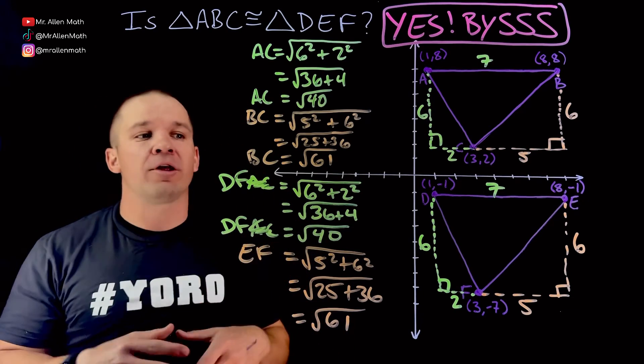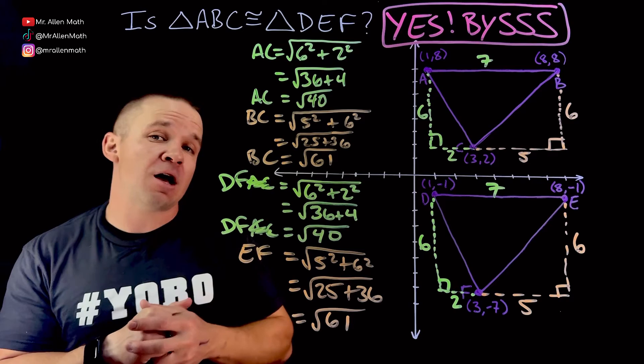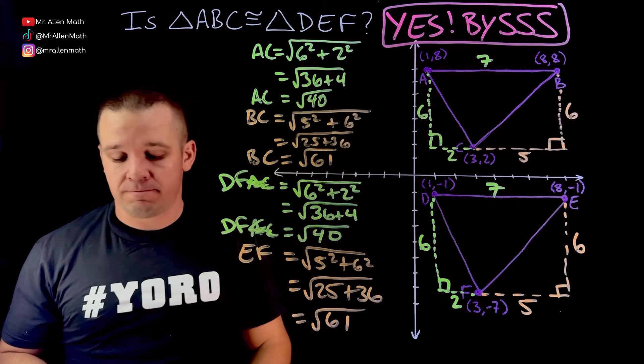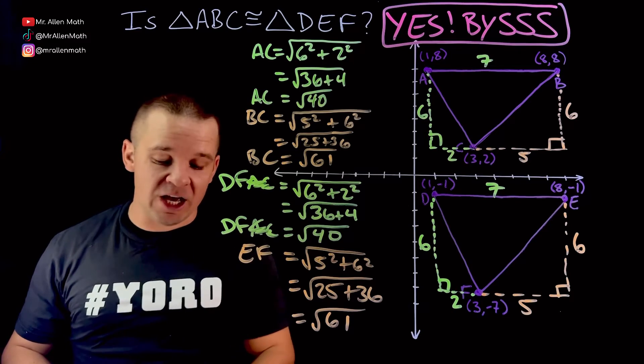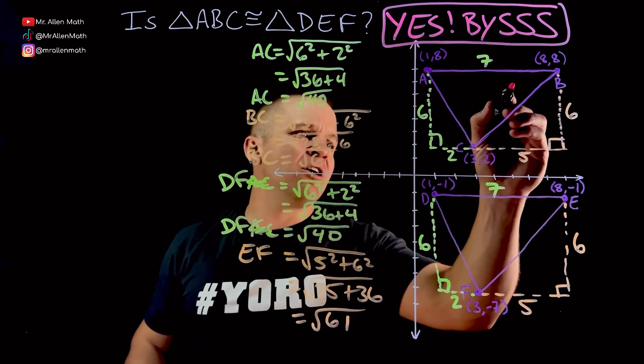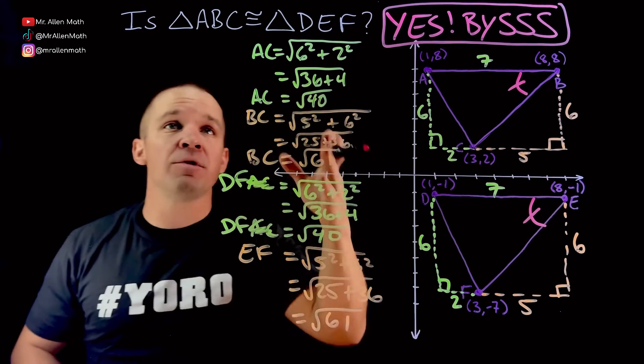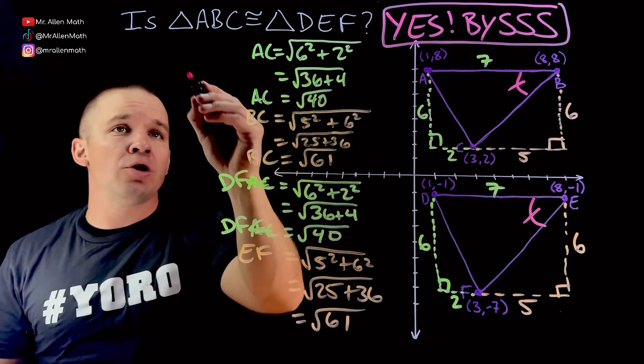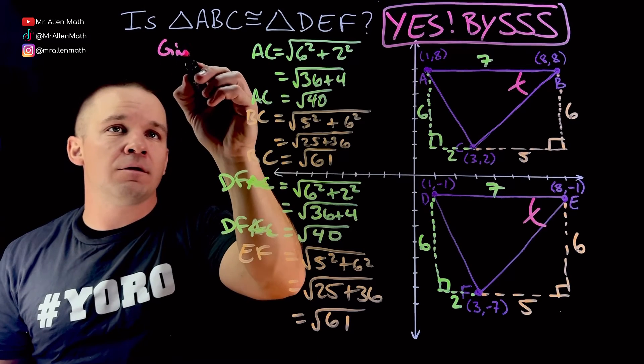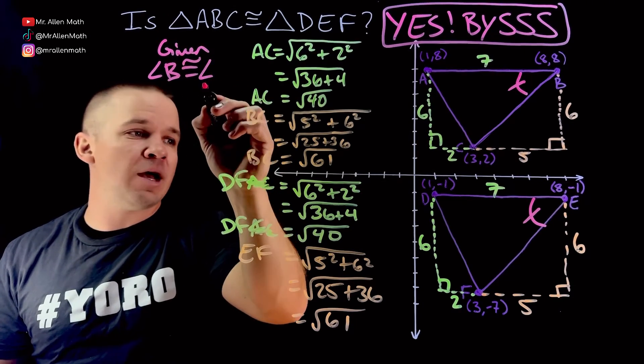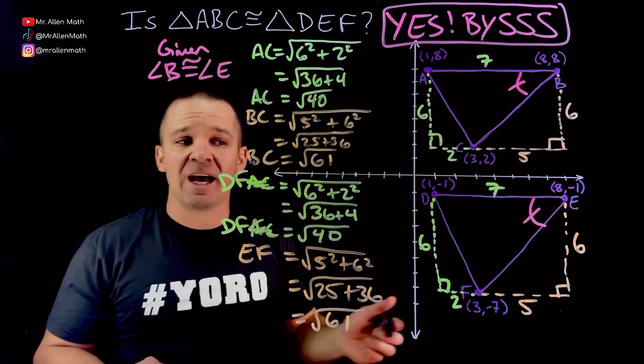Now, one quick thing here, like a what-if. There are times where they might say, are these two triangles congruent, but we're also going to give you that angle B is congruent to angle E. So maybe they'll say, is this true? True, also in the given, angle B is congruent to angle E. So if they did that, then really all I needed to do was get this side here, right?